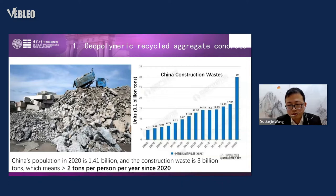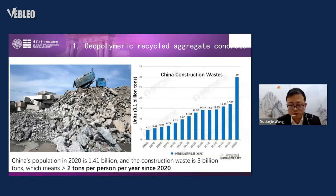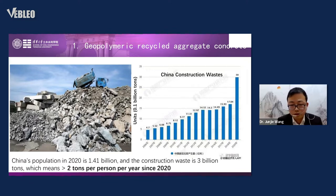As we know, construction waste after demolition of construction projects, especially in China — we can see the figure on the right — in 2020 the construction waste was around 3 billion tons. China's population in 2020 was 1.41 billion, so that's already more than two tons per person per year. How to use this construction waste is an urgent issue.